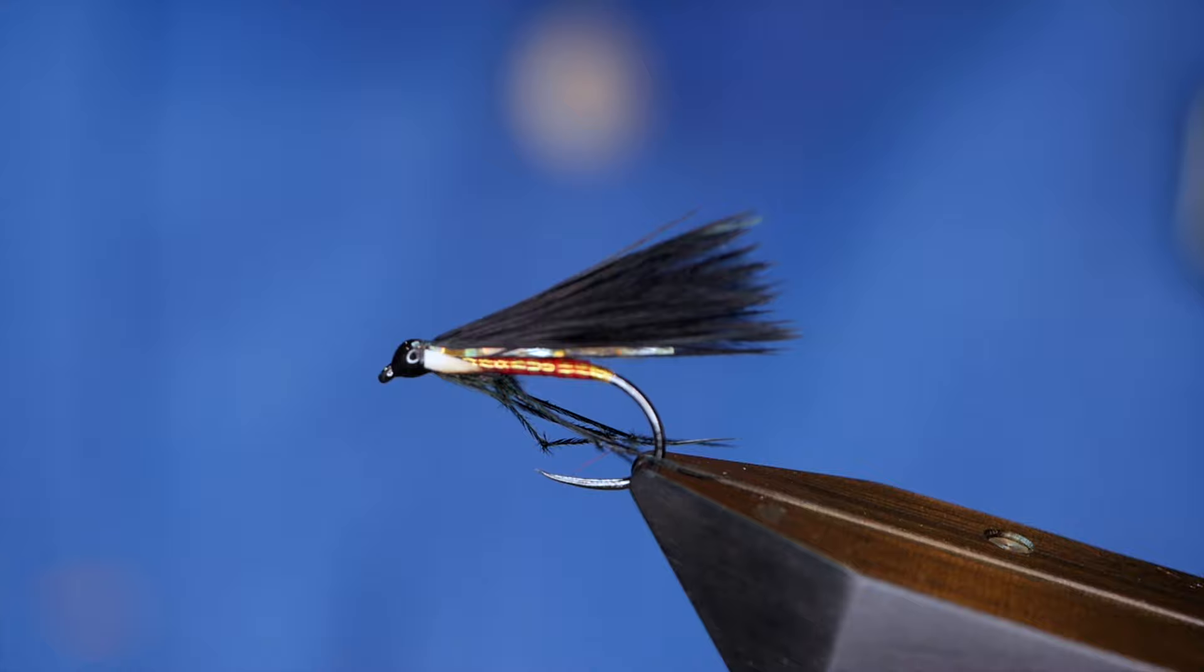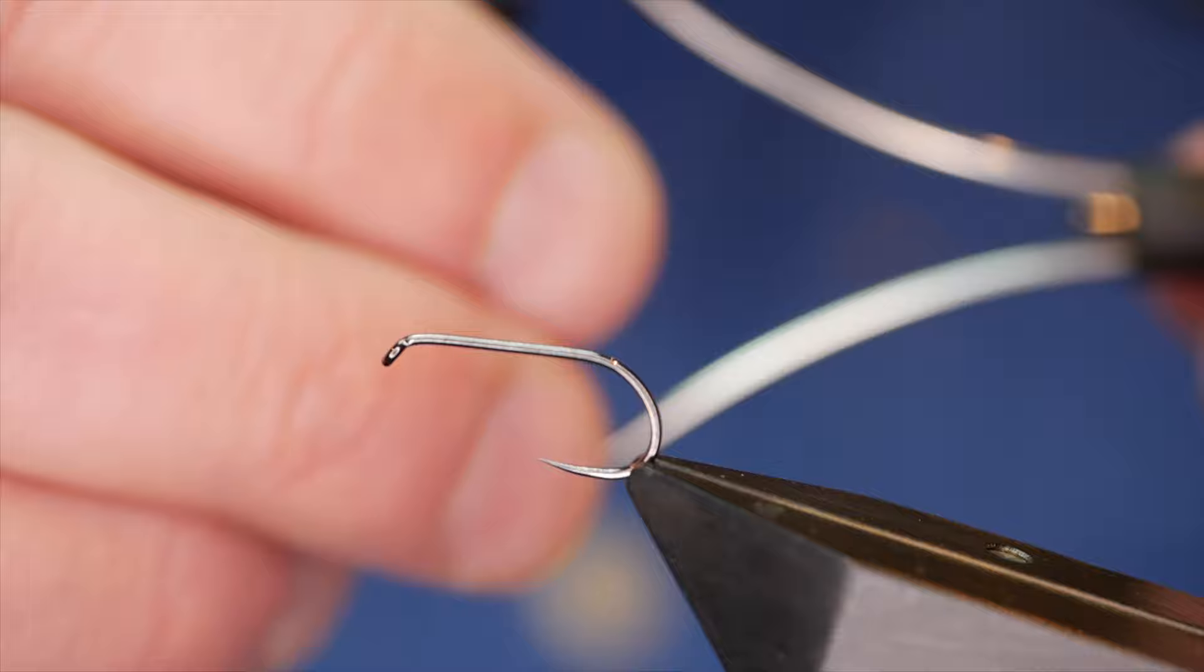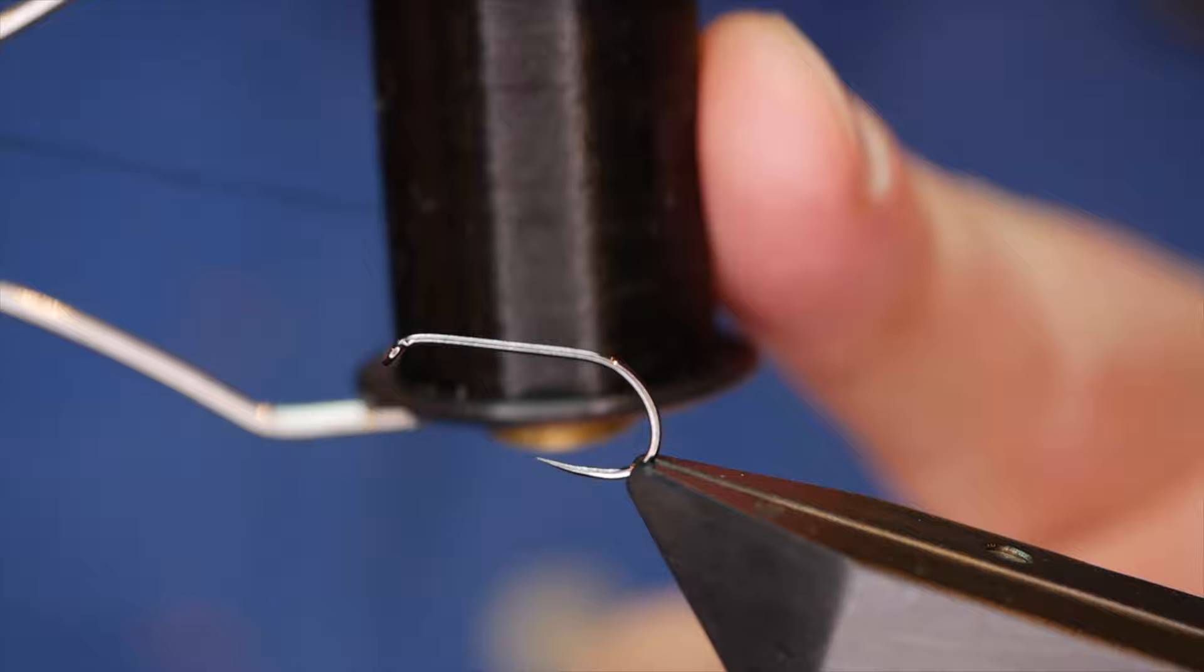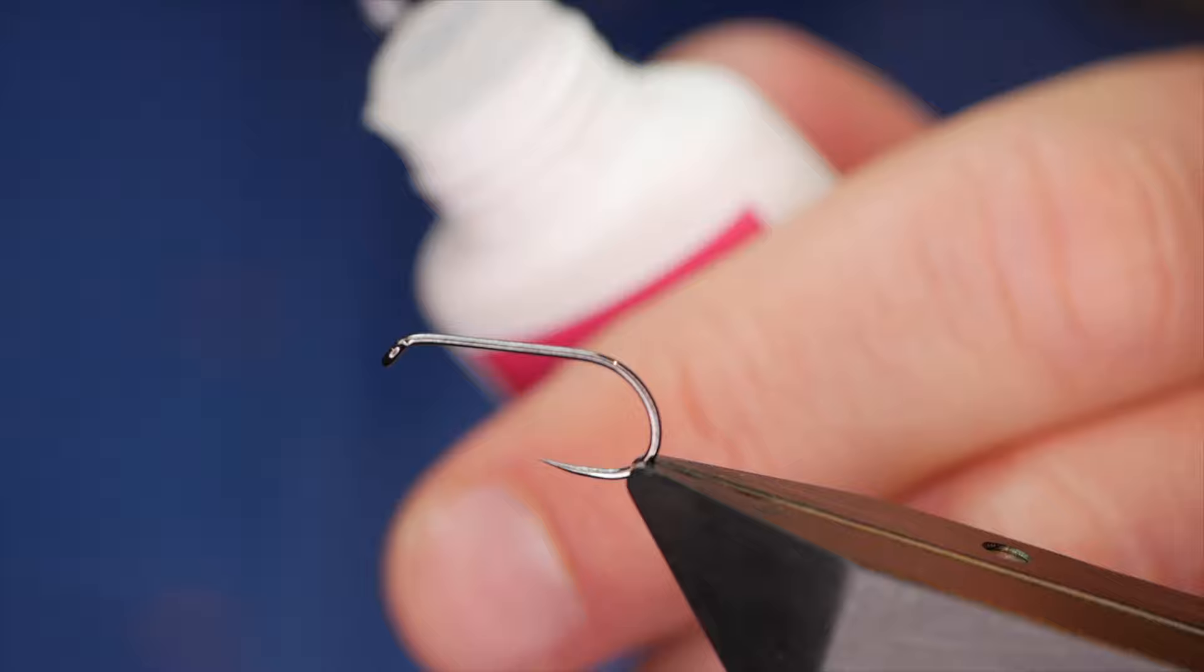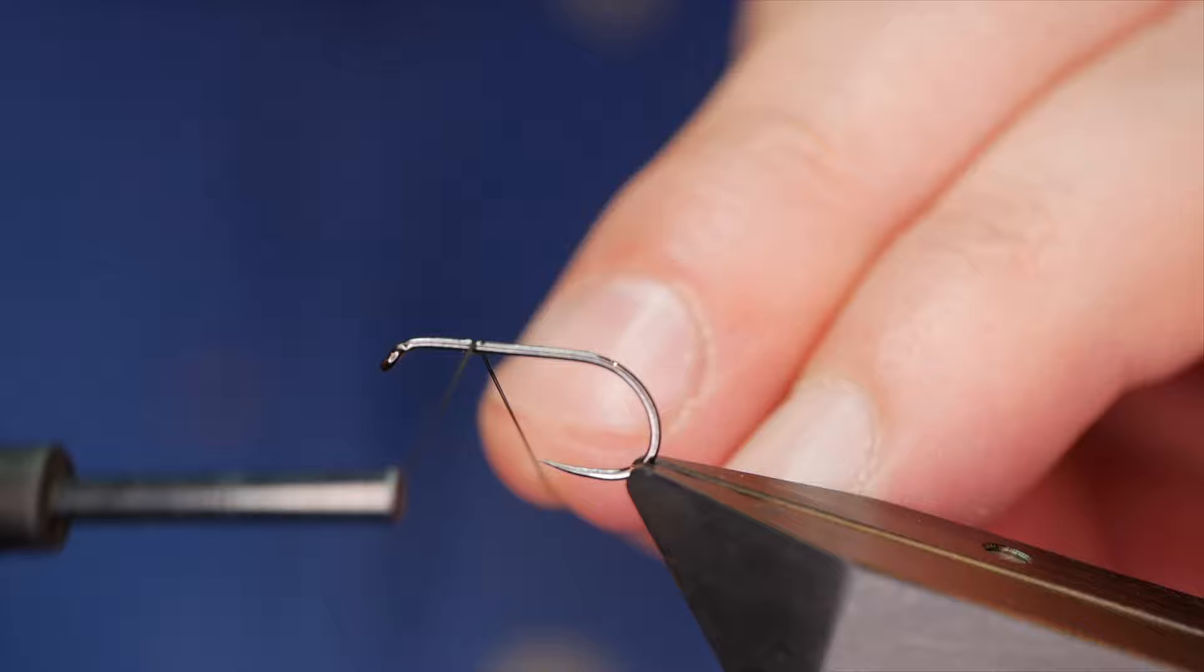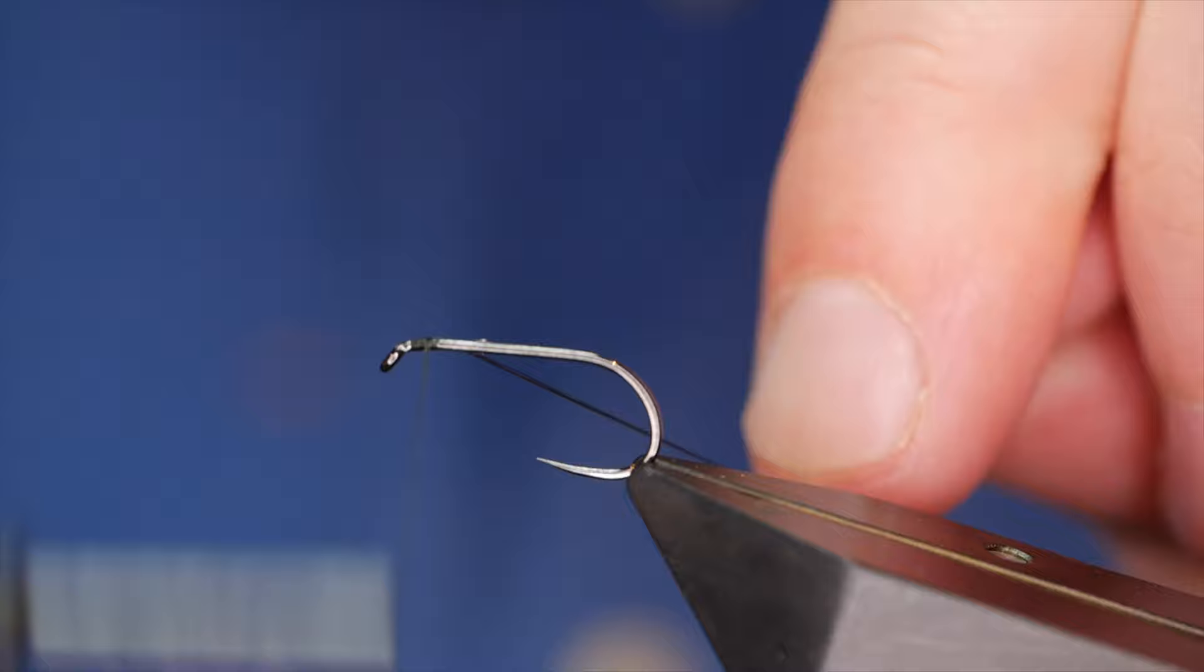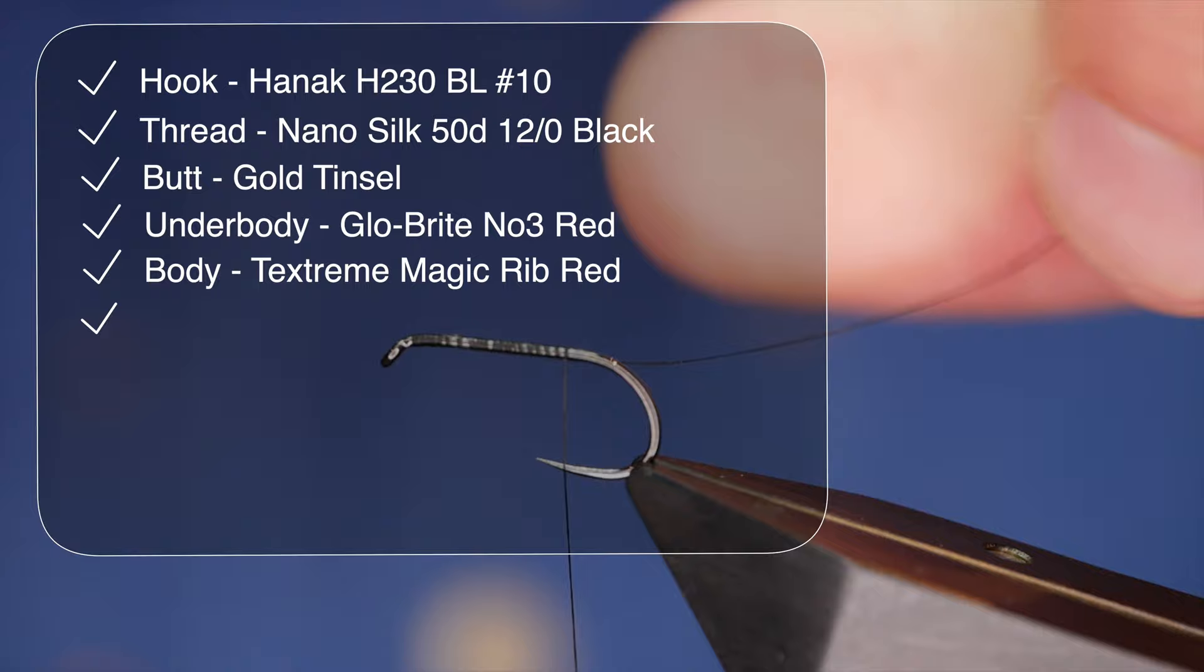The hook in the vise is a Hanak H230 barbless hook at size 10, on medium wire finished in black nickel. The thread I'm using today is nano silk from Semperfly, it's black at 50D or 12/0. As always with the nano silks, I'm going to get a spot of super glue onto the shank of the hook. This helps the nano silk adhere to the shank much better than wax as it is quite slippy. I'm attaching my thread and getting a bed of thread all the way down the shank. I'm not overly worried about neatness at this point.